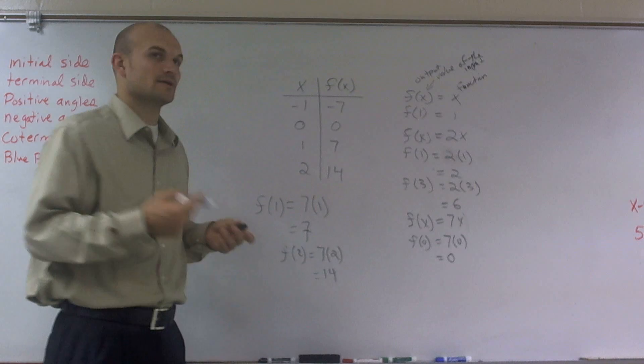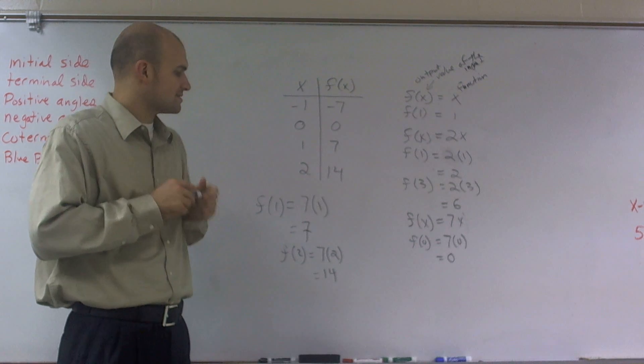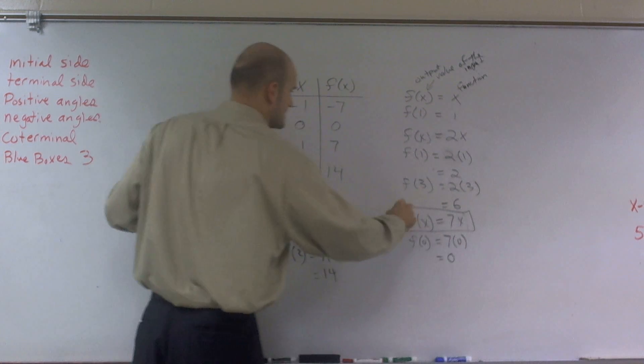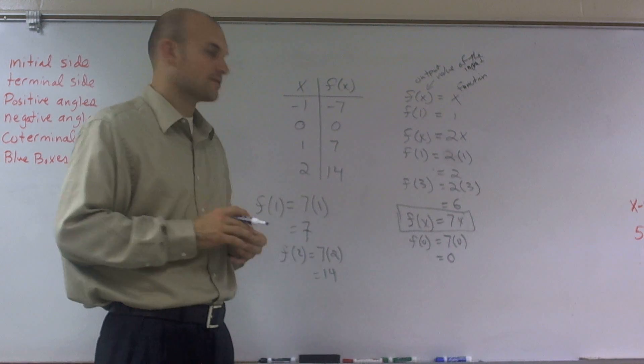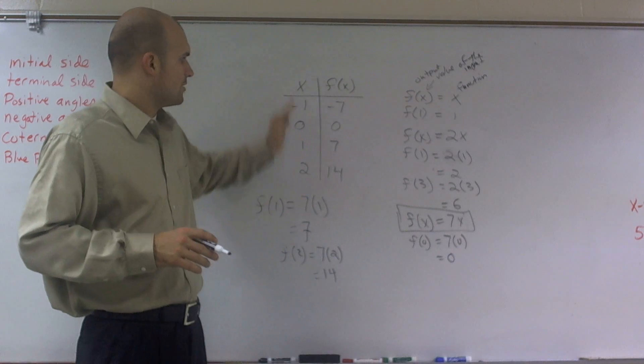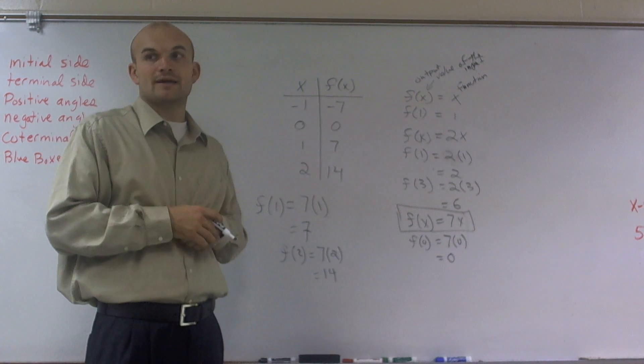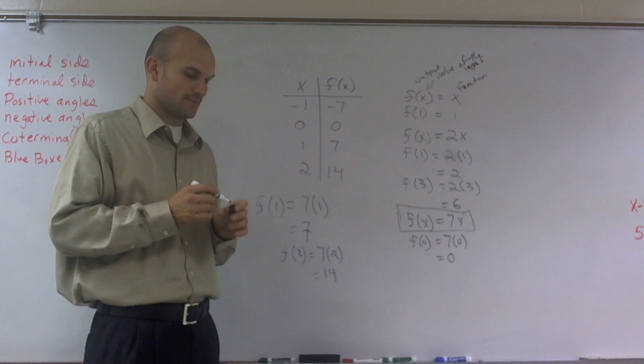So the first thing we're doing in one of these, so therefore my linear function is going to be f of x equals 7 times x. Because what I'm doing is to get all my input, I'm multiplying by 7 to get my output values. All right?